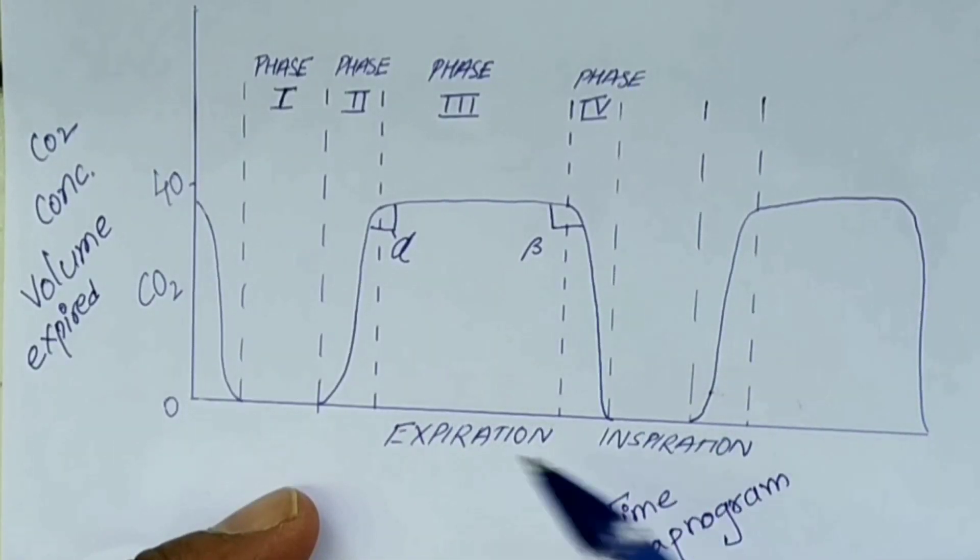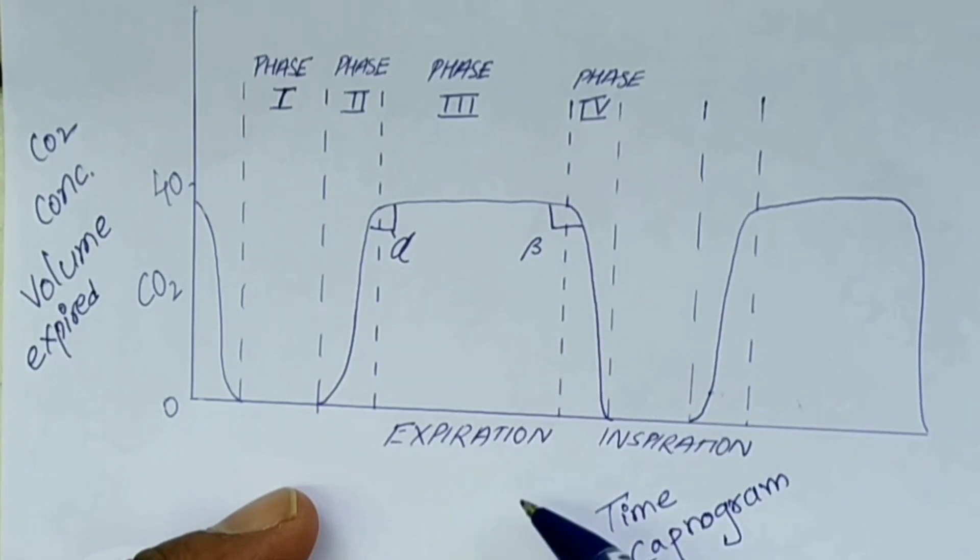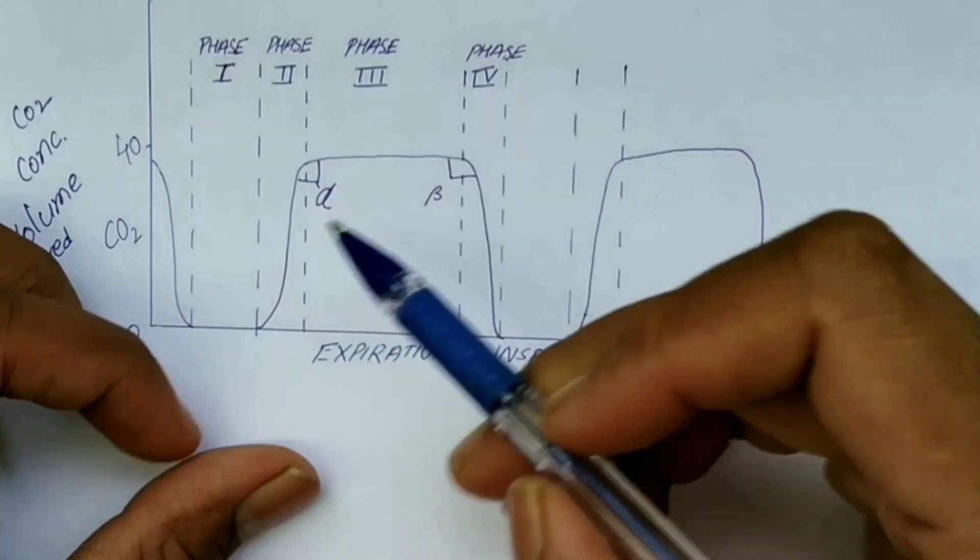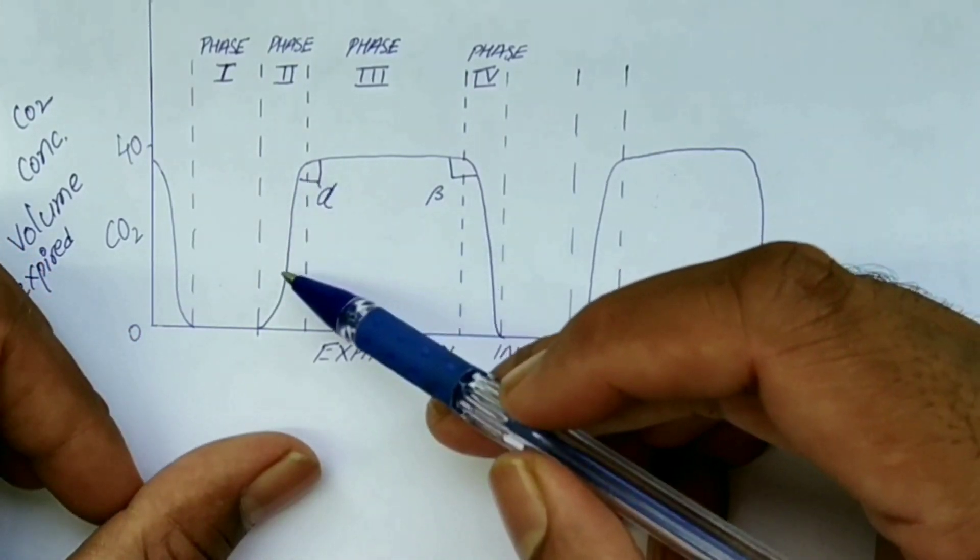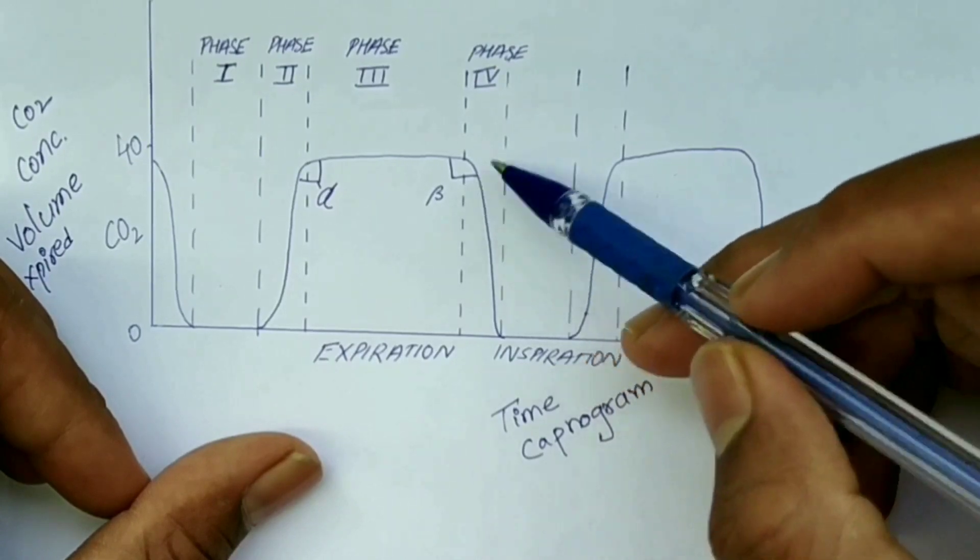A typical capnogram can be considered as two segments: one expiratory and one inspiratory segment, and there are two angles, alpha and beta. The alpha angle shows the ventilation and the perfusion status of the lung, whereas the beta shows the extent of rebreathing.